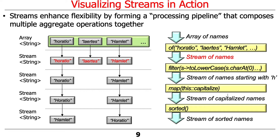Next, we're going to take that stream of names and put it through the filter operation. The filter operation is going to lowercase each of the elements flowing through the stream and check whether it matches lowercase 'h'. So uppercase H will match and lowercase h will match; if it starts with L or O or G or whatever, it won't match. What comes through are names that start with either uppercase or lowercase H, but they haven't been made consistent with respect to capitalization and we haven't sorted them yet.